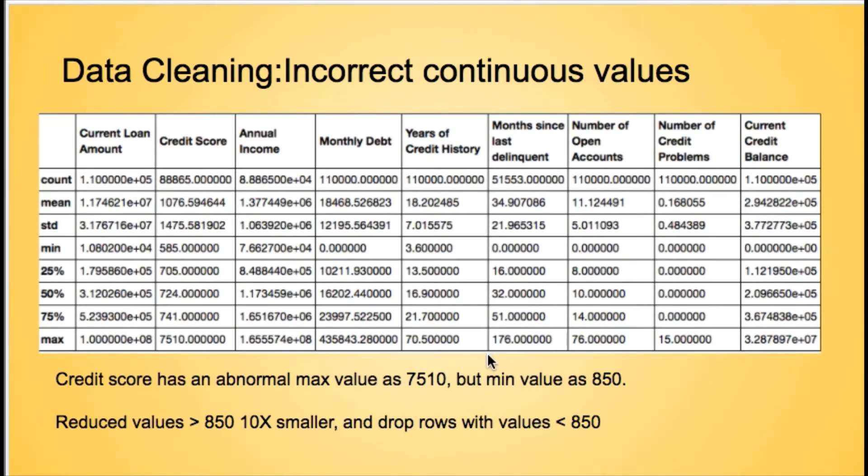For the continuous values, we found out for the credit score, the value distribution is very abnormal, with maximum score at 7,510 and minimum score at 585. Then we just shrank those values larger than 850 ten times smaller, and dropped those rows with values less than 300.